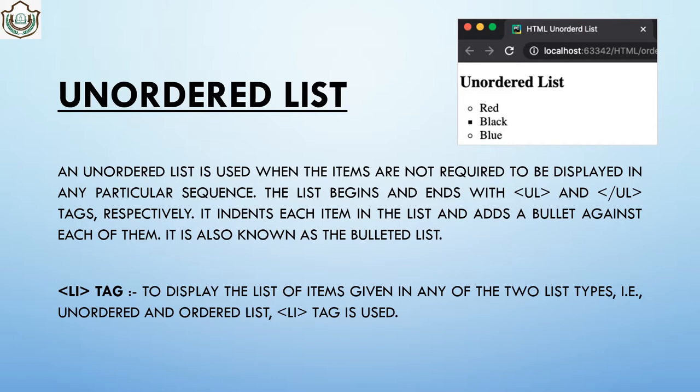We have another tag — the li tag. You use angular brackets before li. To display the list of items in either unordered or ordered lists, the li tag is used. Firstly you write ul for unordered list, then you use li for each of the list items you want to include.